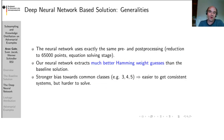For our deep neural network based solution, we use exactly the same pre- and post-processing, but our neural network extracts much better Hamming weight guesses than the baseline solution. However, each of the constraint systems obtained from our deep neural network solution contains a little bit less information than those produced by the linear classifier. Therefore, while we get fewer errors, we have a bit more work to do in order to solve the resulting constraint systems.